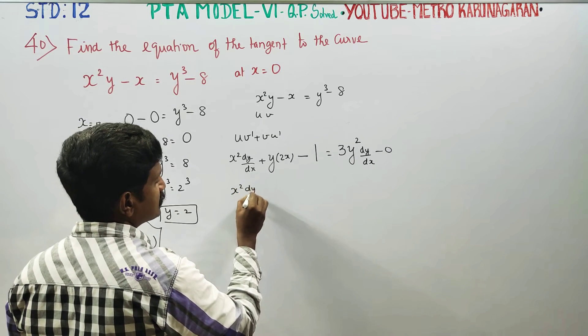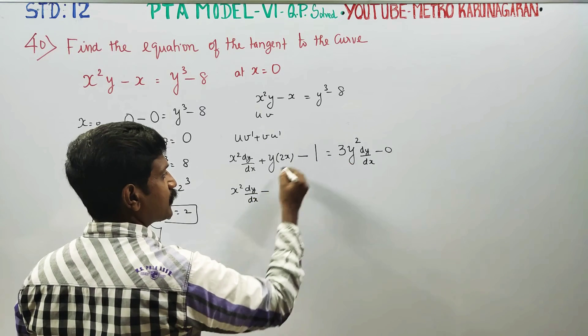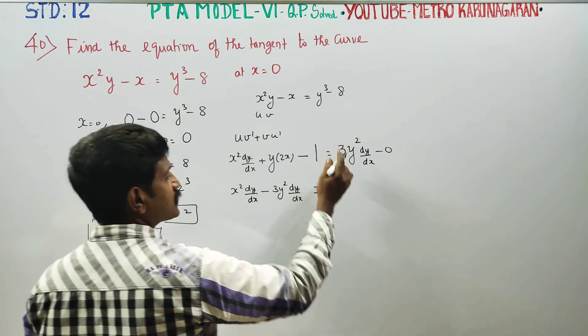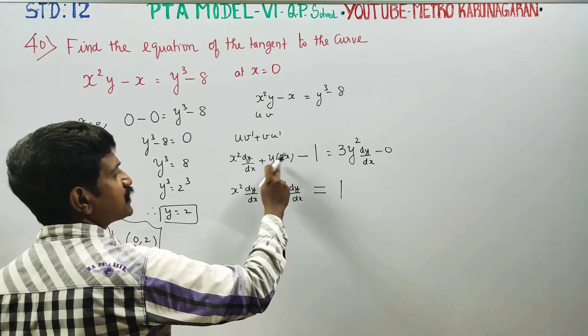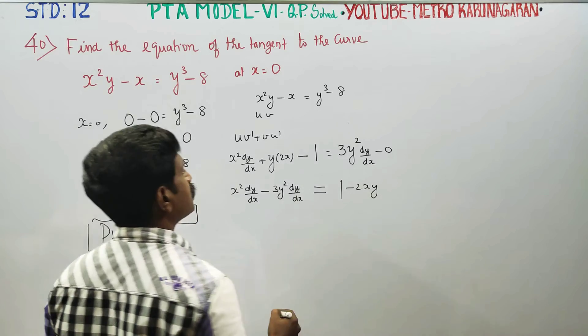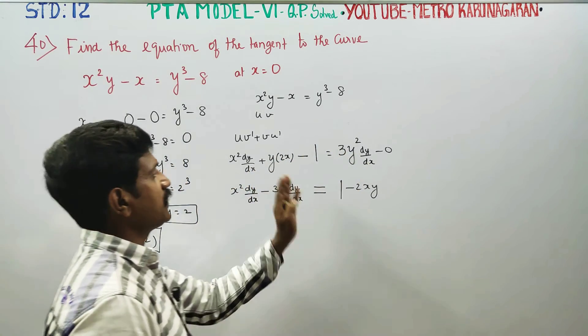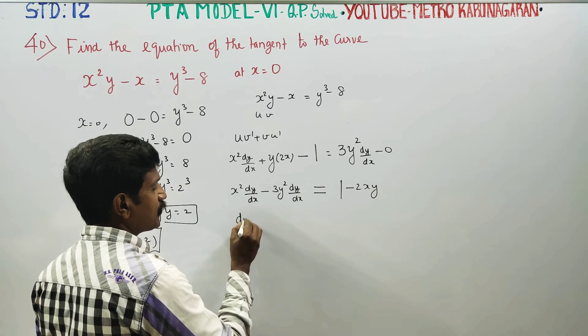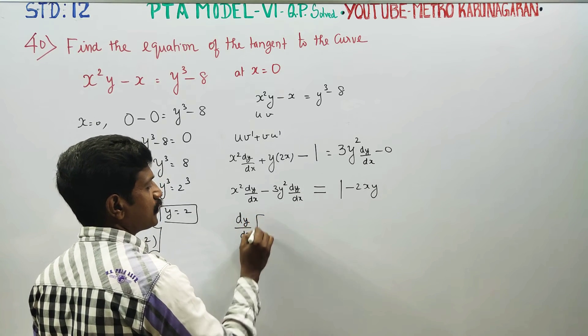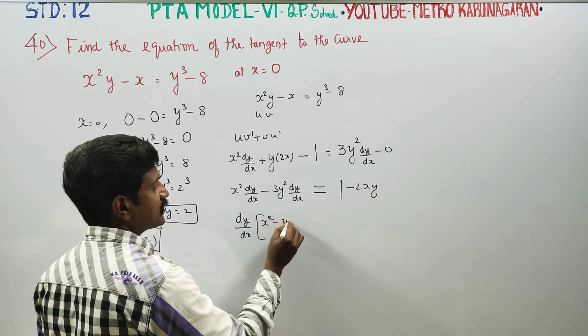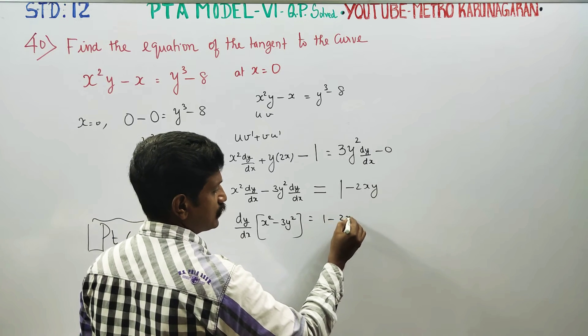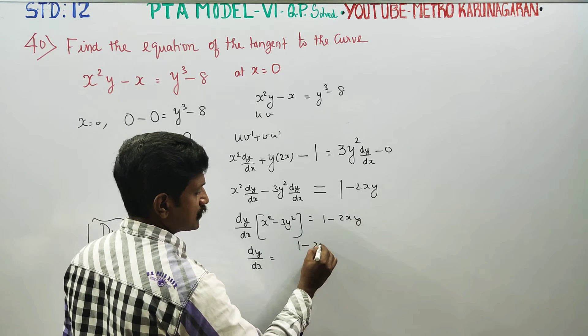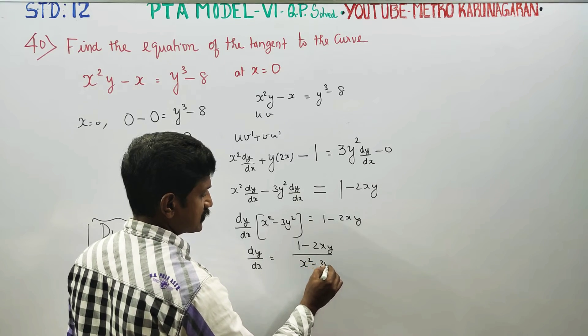x squared dy by dx minus 3y squared dy by dx is equal to minus 1 plus 2xy. Bringing dy by dx terms to one side: x squared minus 3y squared dy by dx is equal to 1 minus 2xy. Therefore dy by dx equals 1 minus 2xy over x squared minus 3y squared.